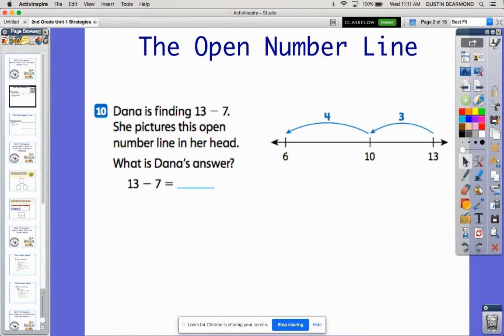So I'll talk to you about the open number line specifically today, looking at the problem from the book with this subtraction problem. Dana is finding 13 minus 7. She pictures this open number line in her head. What is Dana's answer? Again, it's important to remember that this is a mental math strategy.